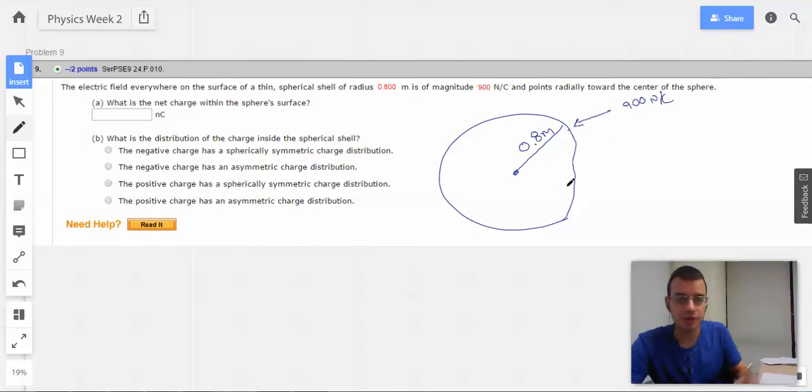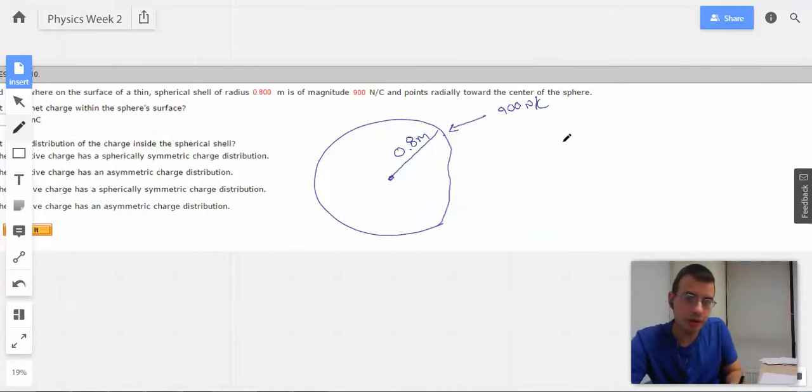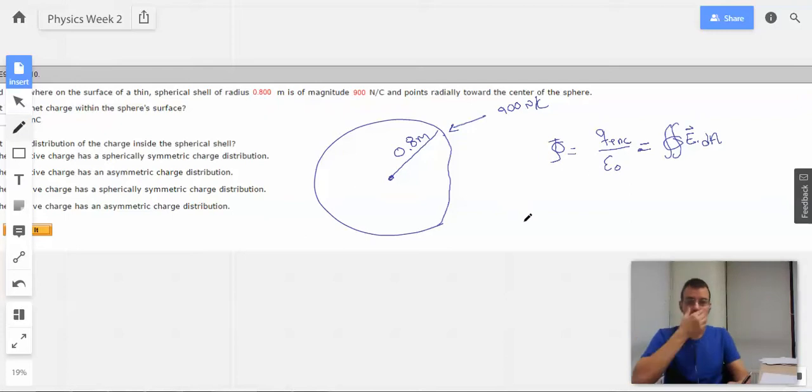And what we're getting at here is Gauss's Law. So, flux, which we don't actually care about here, we're just going to use it for the formula, is Q enclosed over epsilon naught equals surface integral of E dot dA. Now, the electric field is pointing radially inward. So, the angle between the electric field and the surface of the sphere will be the same for all parts of the sphere.